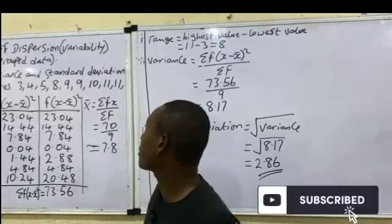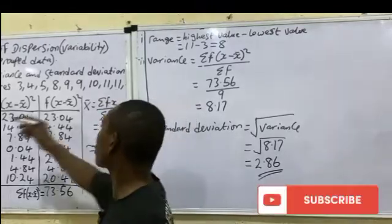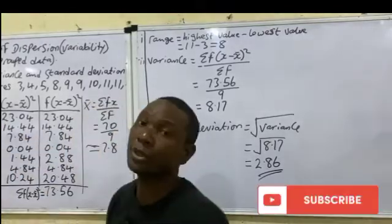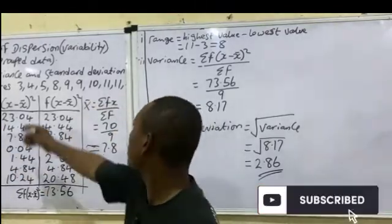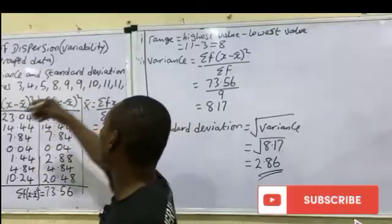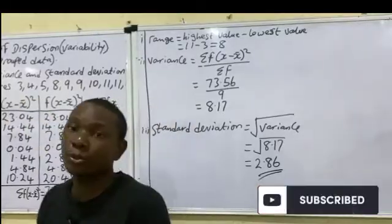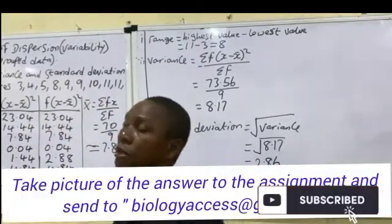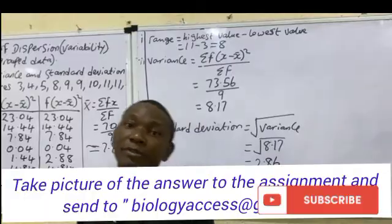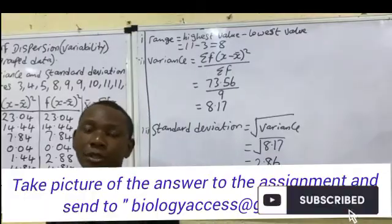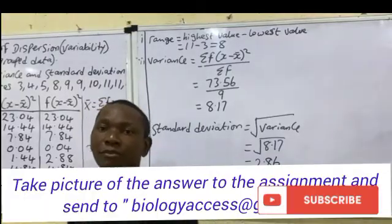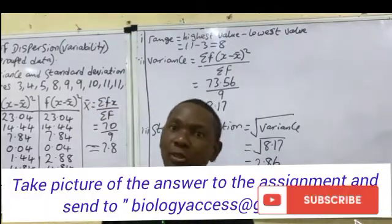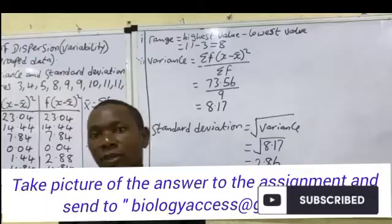Now you can do this as an assignment. Take the same values and add one more value to make it 10 values total, then calculate the range, variance, and standard deviation. Please subscribe to support this channel. Thank you.